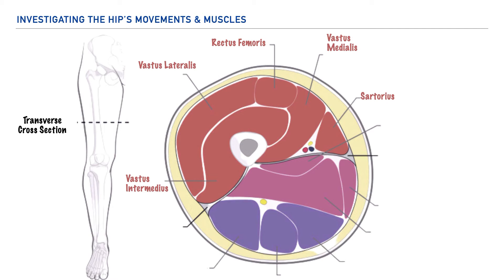Moving over to our medial compartment, we'll find the adductor longus and adductor magnus. And although it's not pictured on this diagram, we'd also find the adductor brevis muscle. So in total, all of our adductor musculature belong to the medial compartment. In addition, we'll also find the gracilis muscle in this compartment as well.